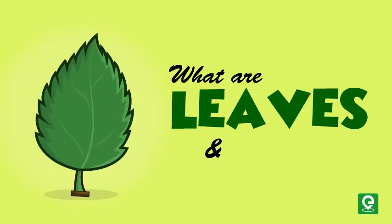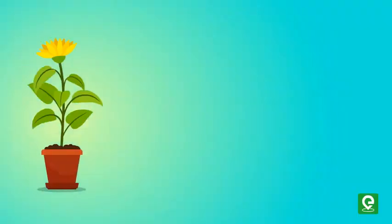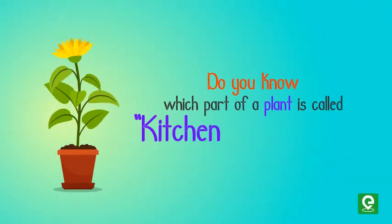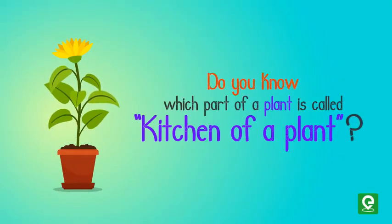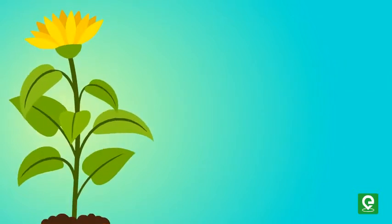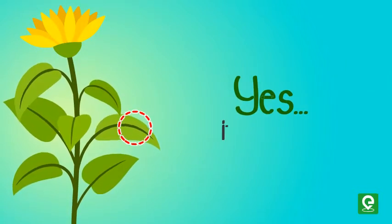What are leaves and their types? Do you know which part of a plant is called the kitchen of the plant? You might be thinking about green colored leaves — yes, it's true.